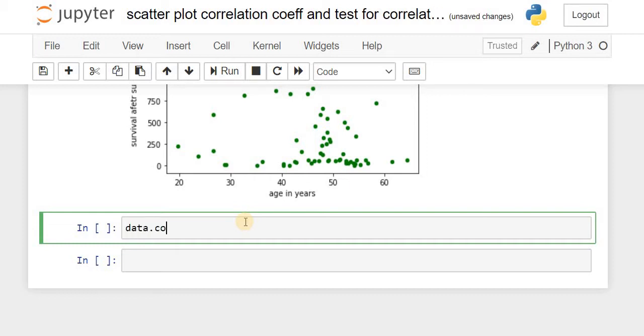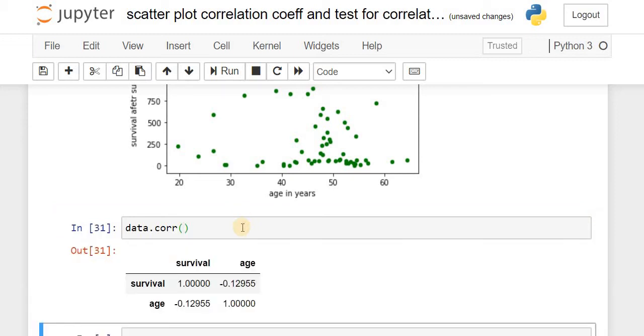Using the command .corr() will give us a correlation. Between age and survival, there is a negative correlation, showing an inverse proportion. As age increases, chances of survival reduce.